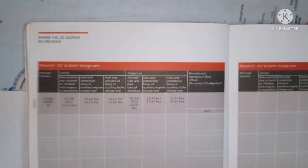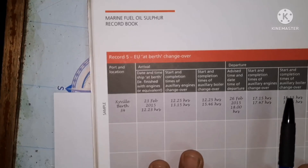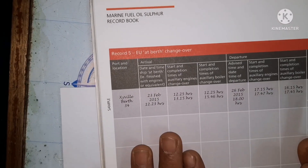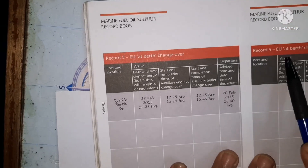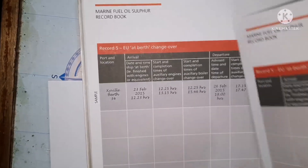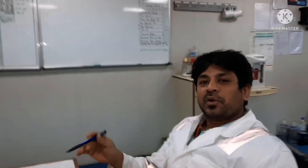Record 5 is nowadays no more in use. Record 5 was to have information on berth changeover, and Record 6 was to have information on the fuel used during that changeover. Previously, when a vessel went alongside at port, when the first rope was thrown for securing the vessel, we would do a changeover from VLSFO to LSMGO. And again, changeover back from LSMGO to VLSFO would happen when the last rope was taken out as the vessel sailed out. That is what needed to be recorded in Records 5 and 6.